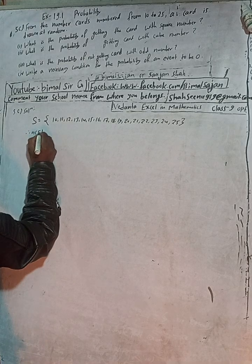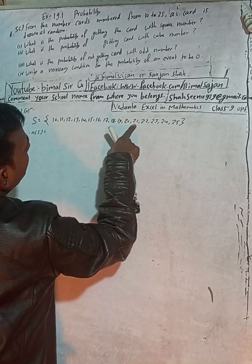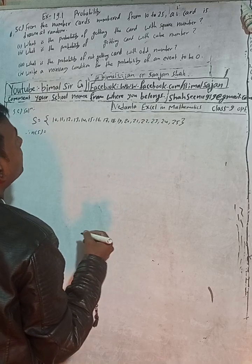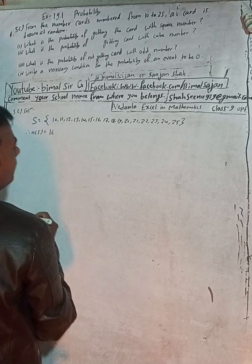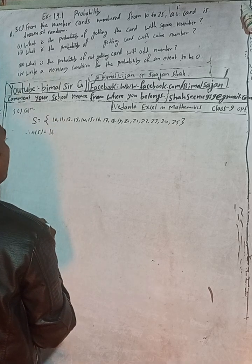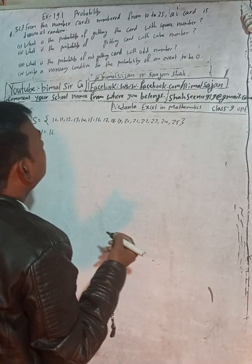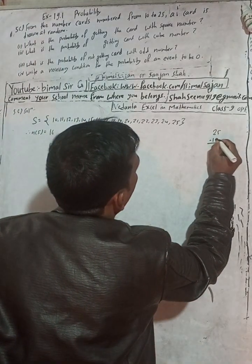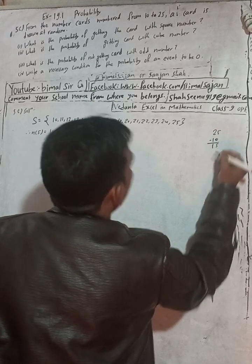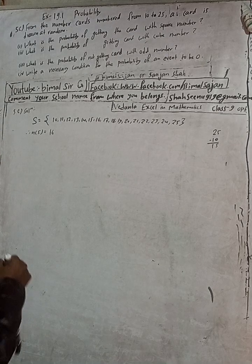How much is the sample here? Counting: 1, 2, 3, 4, 5, 6, 7, 8, 9, 10, 11, 12, 13, 14, 15, 16 — so n(S) = 16. If there is a lot of data, you can use the formula: 25 minus 10 plus 1 equals 16. So n(S) = 16.